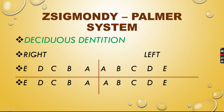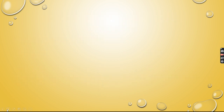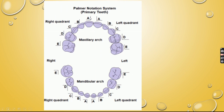For the deciduous dentition in the Zsigmondy-Palmer system, starting with A to E in the right maxillary quadrant, and A to E also in the left maxillary quadrant. Similarly, A to E in the left mandibular arch and A to E in the right mandibular arch — so A to E in all four quadrants.